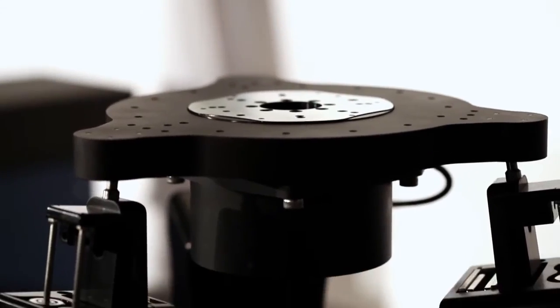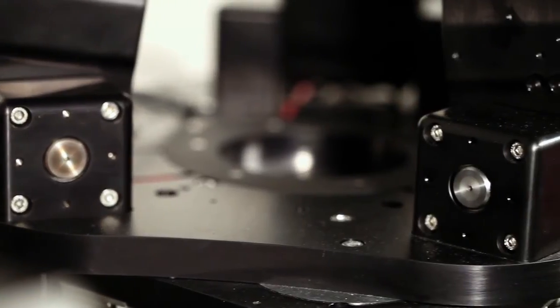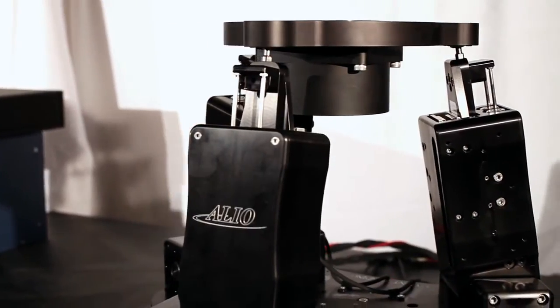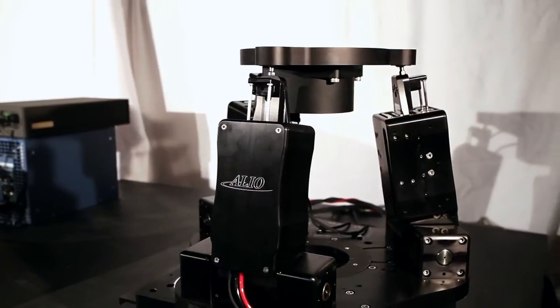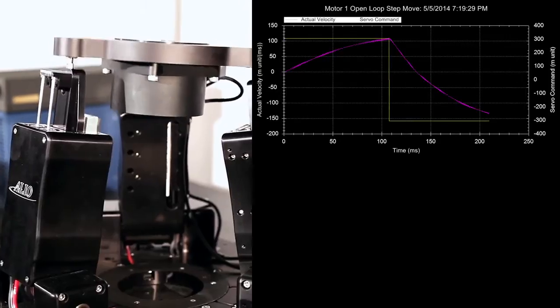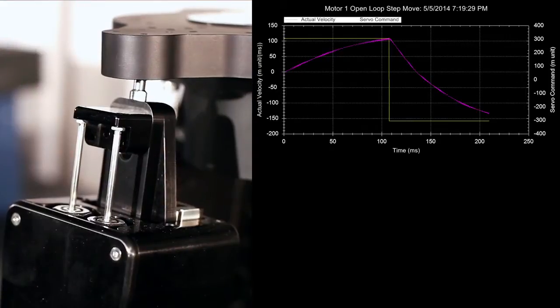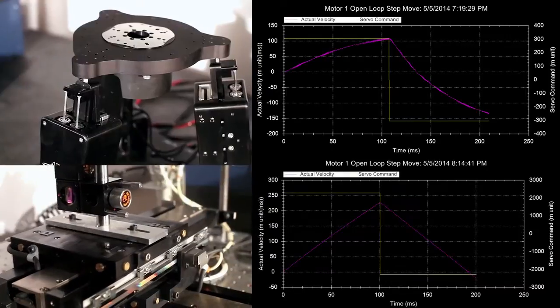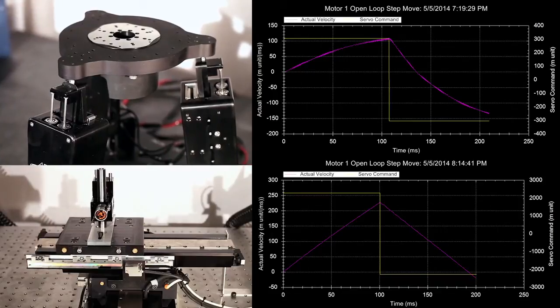For comparison purposes, we also have a 6-axis hexapod stage produced by Alio Industries, which also has sinusoidal encoders. You will be able to observe, without the use of the autocorrecting interpolator, the Alio stage, despite having high quality encoders, will not have the same position fidelity that our smaller stage with the autocorrector has.